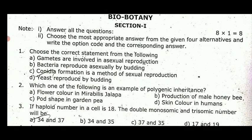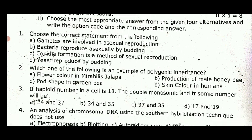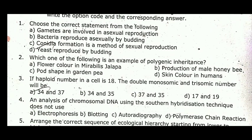First, we have to choose the correct statement from the following. This is a book-back question. Question: which one of the following is an example of polygenic inheritance? The answer is option D — skin color in humans.